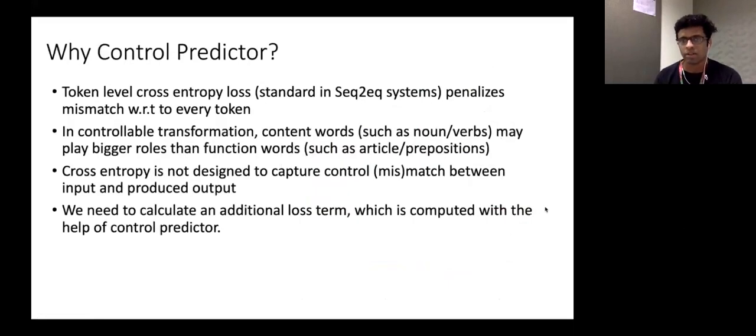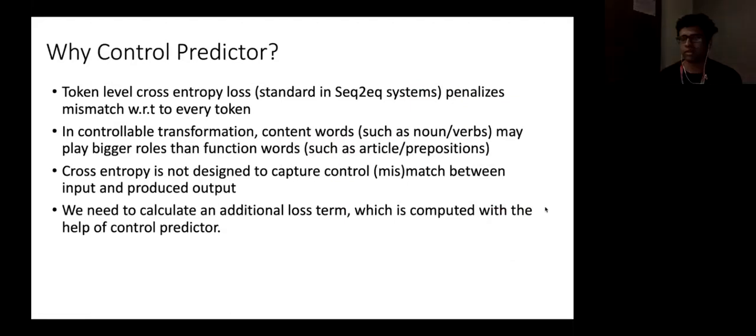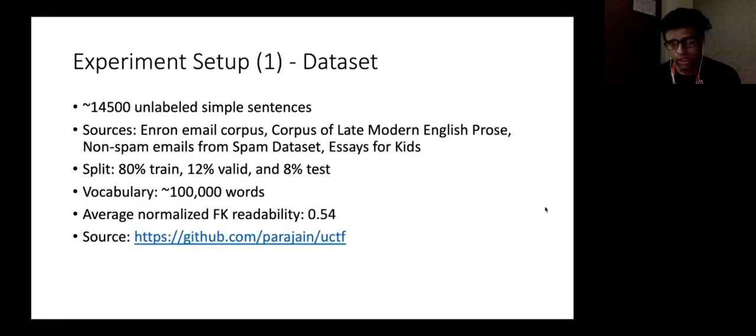So why control predictor? I just explained it. We need it because cross entropy loss is not alone adequate enough to decide whether the control values given by the user as input is taken care of while the learning process goes on.